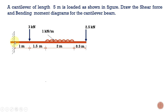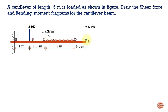First let us name the points where we are going to calculate the shear forces and the bending moments. The first point is A, the second is point B where a point load is acting, the third is point C where the UDL starts to act, point D where the uniformly distributed load ends, and point E at the end of the cantilever beam where another point load is acting.